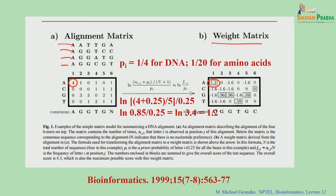You then convert this alignment matrix into a weight matrix score. Looking at the alignment you can see the consensus: A is consensus at position 1, G is consensus where it appears 3 times, and where counts are equal you put N. Here also they apply a pseudo count — they add the prior probability.